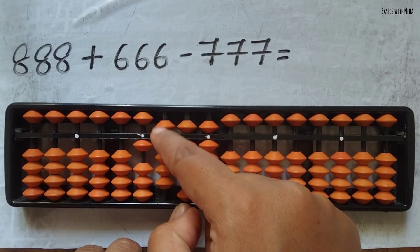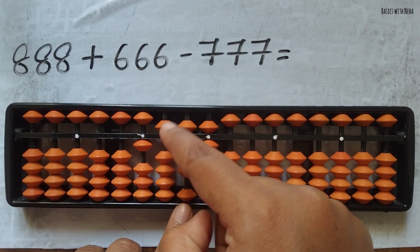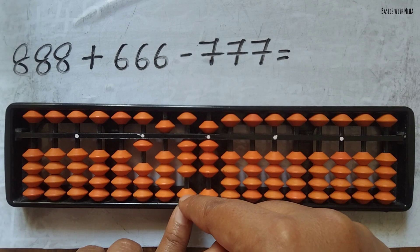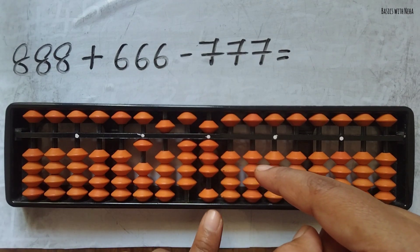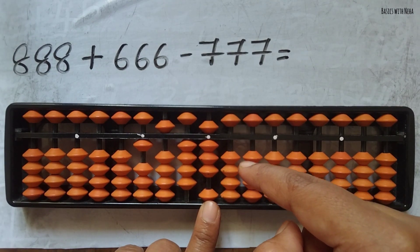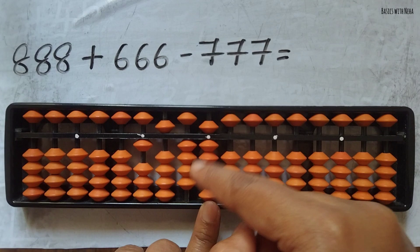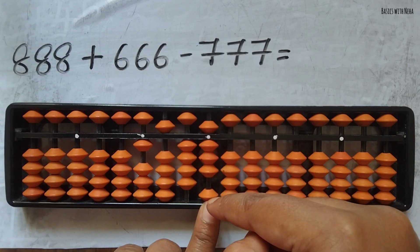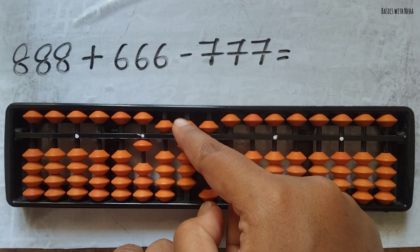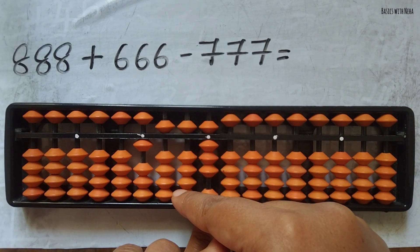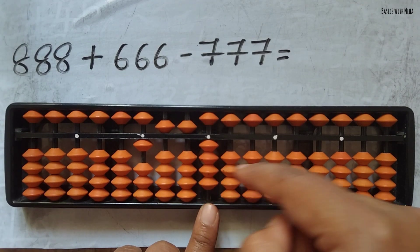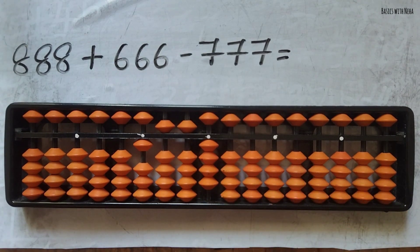To add plus 10, it is plus 5 minus 4. I added plus 10 minus 5 plus 1, complete the formula. Again here, we have to do the same thing — the combination formula for plus 6 which is plus 10 minus 5 plus 1. So to do plus 10, it is plus 5 minus 4. I added plus 10 minus 5 plus 1, complete the formula.